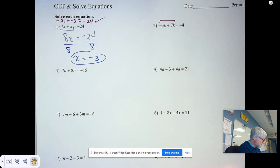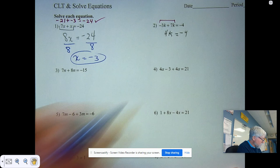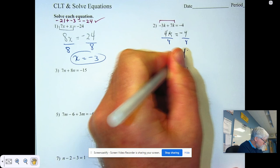When we combine the like terms, negative 3k and 7k got you 4k. So 4k equals negative 4. Then I said to divide by the coefficient, 4. And we find our k is negative 1.